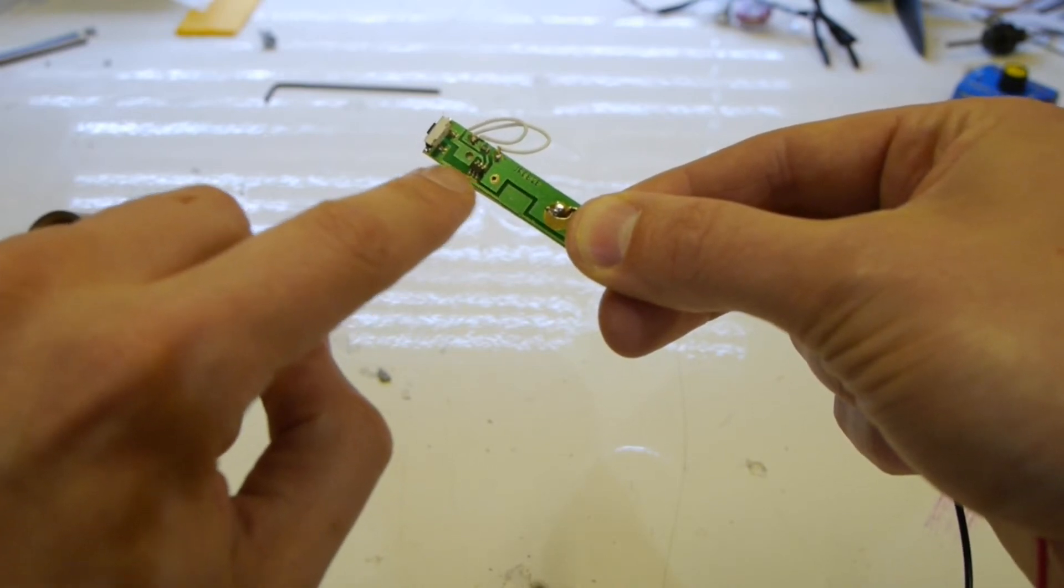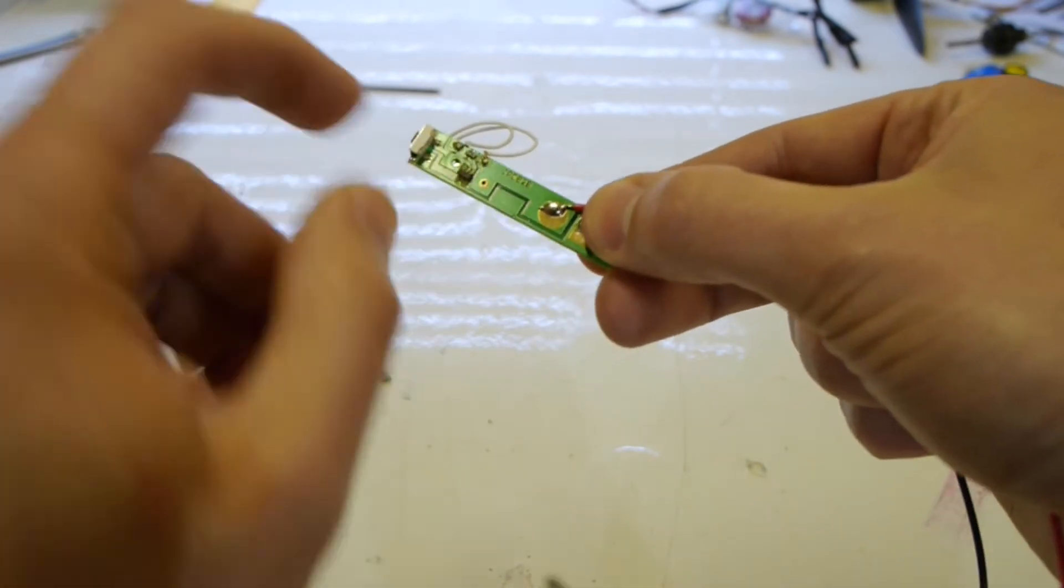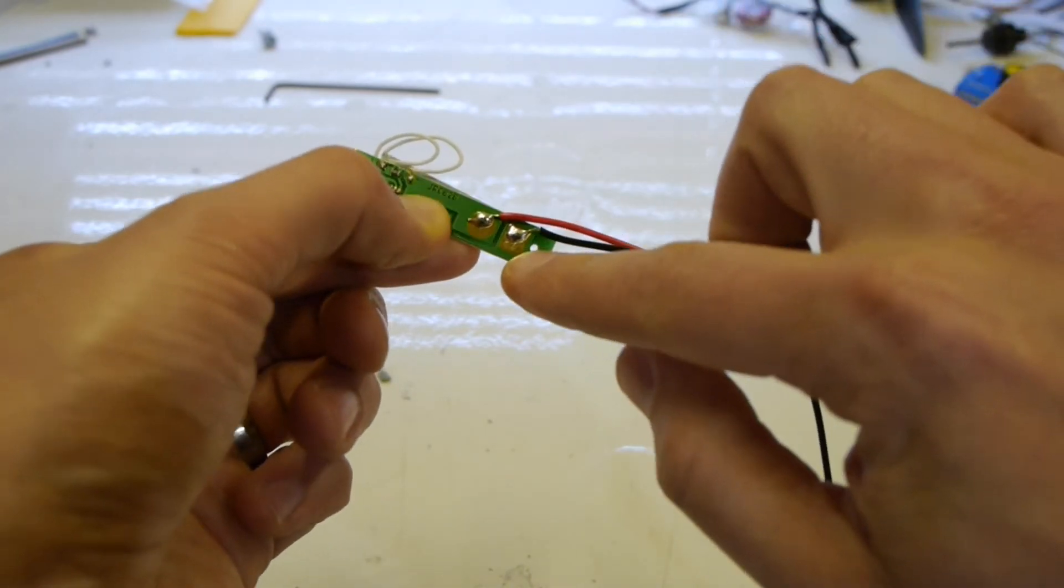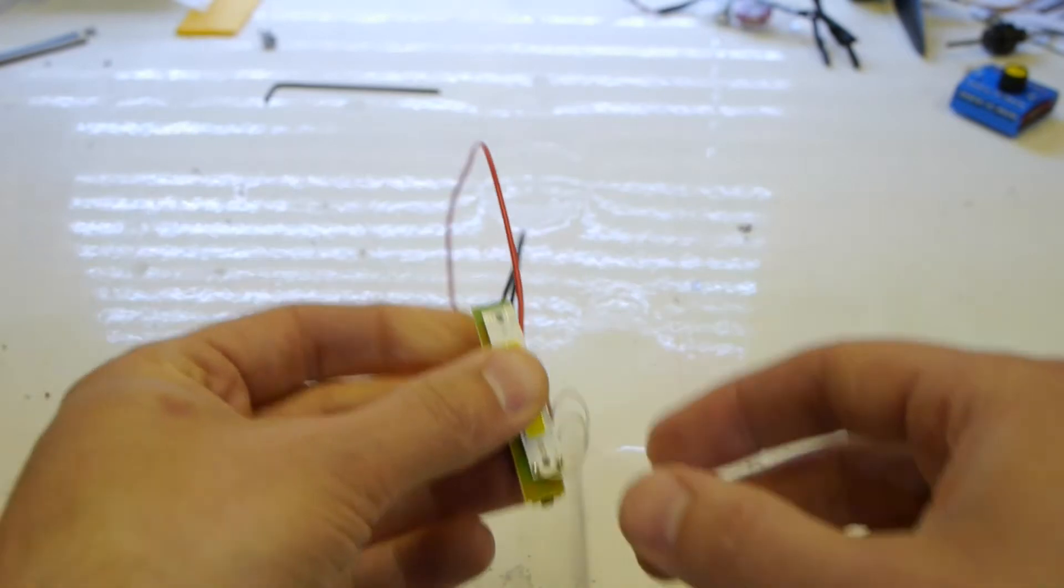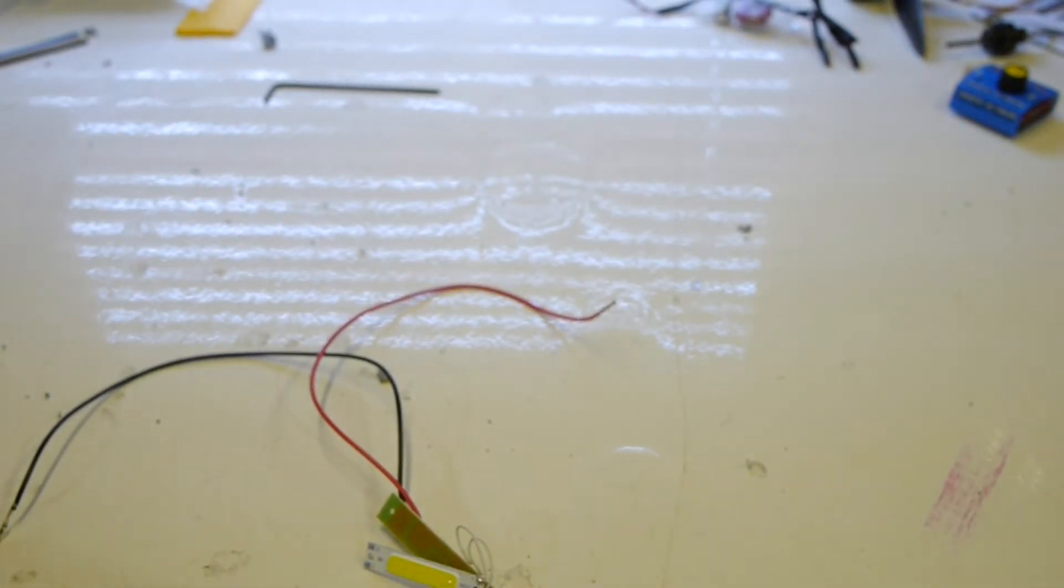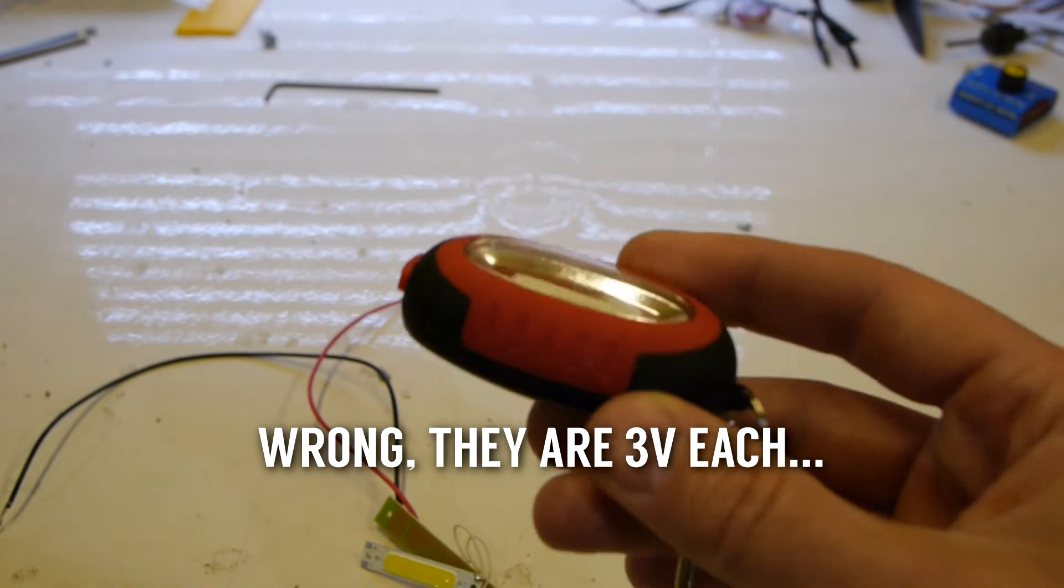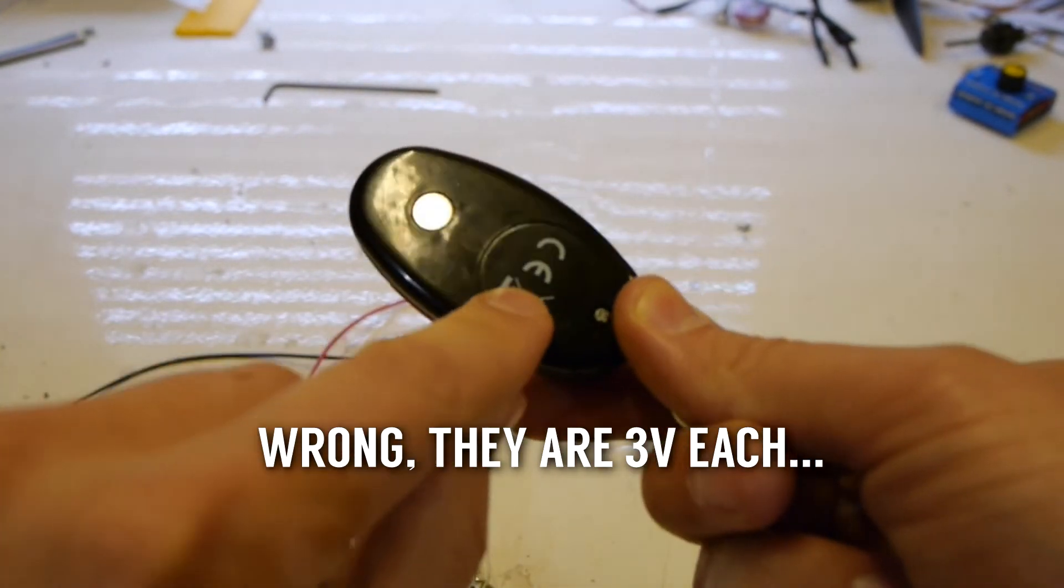You see there's minimal circuitry and obviously the battery terminals connect on. It uses some coin cell batteries which basically are one and a half volts each so they just go in behind here.